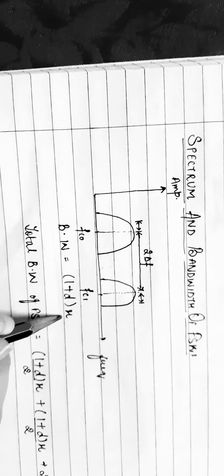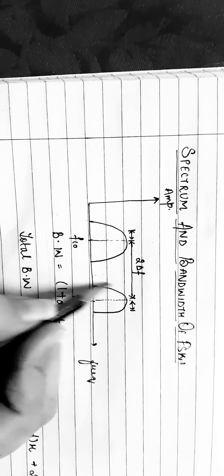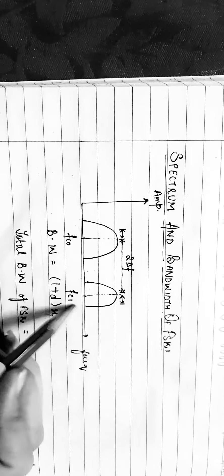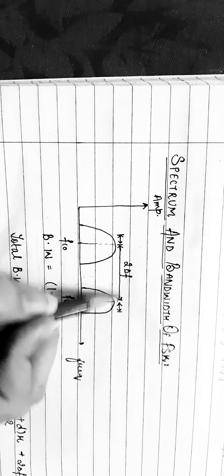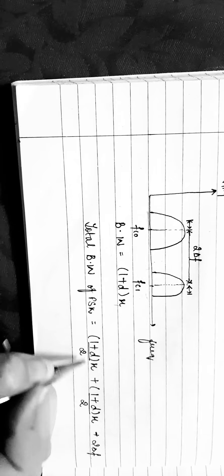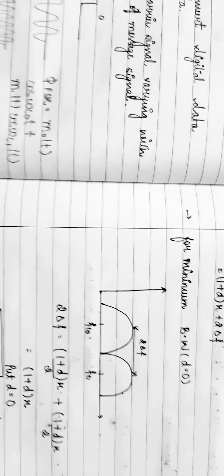For the spectrum and bandwidth of FSK, we have a graph between amplitude and frequency. Unlike ASK, FSK has two frequency bands — one for bit 1 and one for bit 0. The first band is for FC0 and the second for FC1. The difference between both carrier frequencies is represented by 2Δf. The total bandwidth of FSK equals (1 + D)·r/2 + (1 + D)·r/2 + 2Δf, which simplifies to (1 + D)·r + 2Δf.